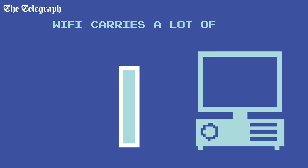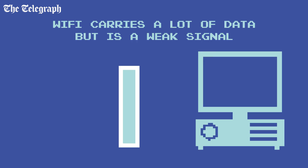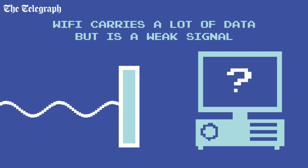Their relatively high frequency means these microwaves can contain a lot of data, but they don't travel through matter very well. The molecules in your wall can disrupt or stop the signal, causing interference. With enough walls or dense materials, you will lose the signal completely.